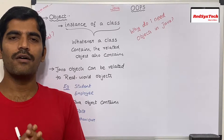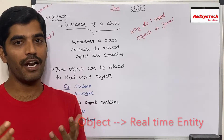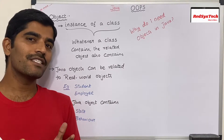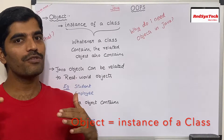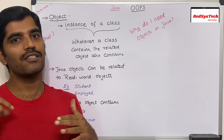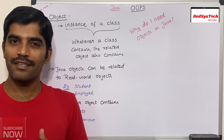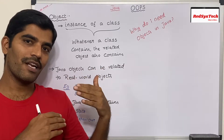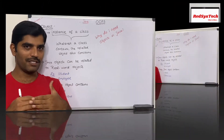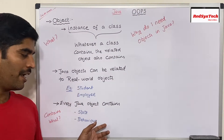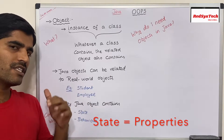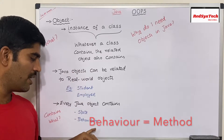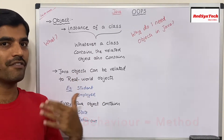First of all, an object is nothing but a real-time entity that we define in our real life. In Java, an object is nothing but an instance of a class, which means that whatever the class contains, the object we create for that particular class also contains the same thing. A class contains properties, which are variables and methods. Similarly, an object also contains the same variables and methods. So an object in Java contains a state and behavior — state relates to the variables we define in our class, and behavior relates to the methods we define in a class.